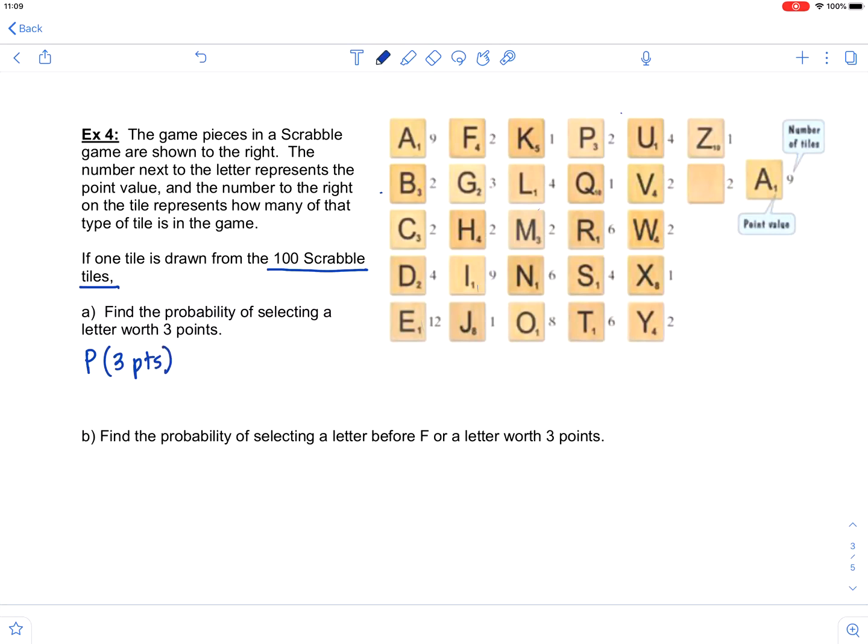So you need to find which letters are worth three points, and then also how many of each you have of those letters. So if we're looking at letters worth three points, the B, C, M, and P are all worth three points indicated by that small three next to the letter.